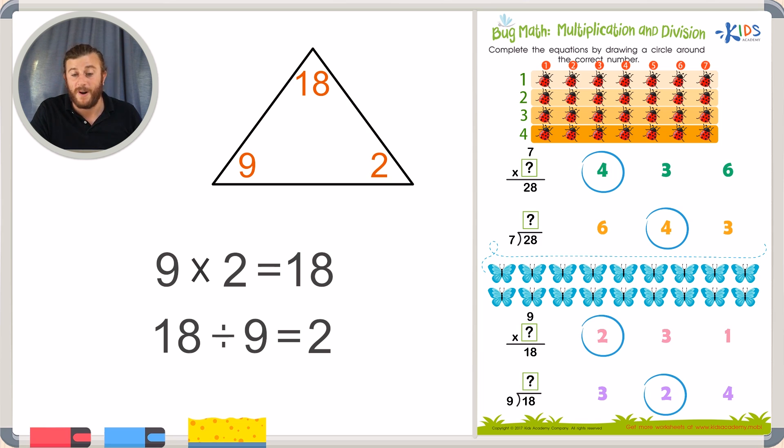Boys and girls, remember, you can also check your work by circling groups of 9. Let's count the first row. 1, 2, 3, 4, 5, 6, 7, 8, 9. There's 9 butterflies in the first row. So that must mean there's 9 butterflies in the second row.